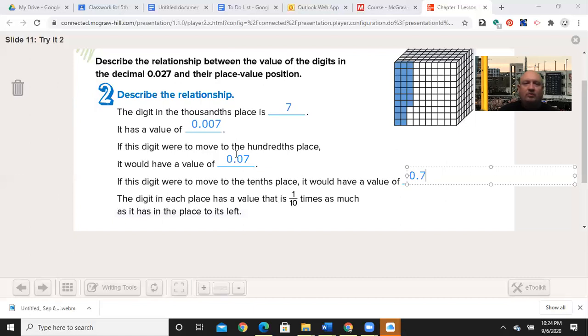It also means the digit in each place has a value that's one tenth as much as the one to its left. So when it's in the tenths place, it's 0.7. If I go over to the hundredths place, I divide it by 10 or it has one tenth as much of a value, 0.07. Now it's 0.007 because I divided 0.07 by 10. So now you should really be in a pattern here.